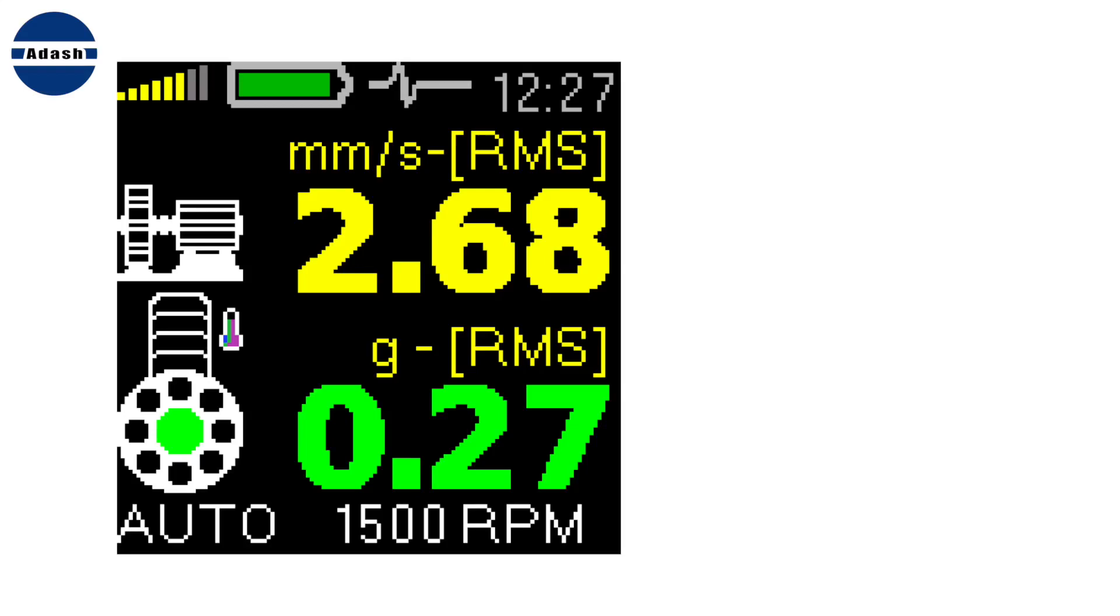You can take first reading once you prepare your points. Take two values from each point: the velocity value in millimeters per second or inch per second and the acceleration value in g. The velocity value is measured in frequency range from 10 to 1000 hertz. It gives us the information about mechanical failures like unbalance, misalignment and looseness.